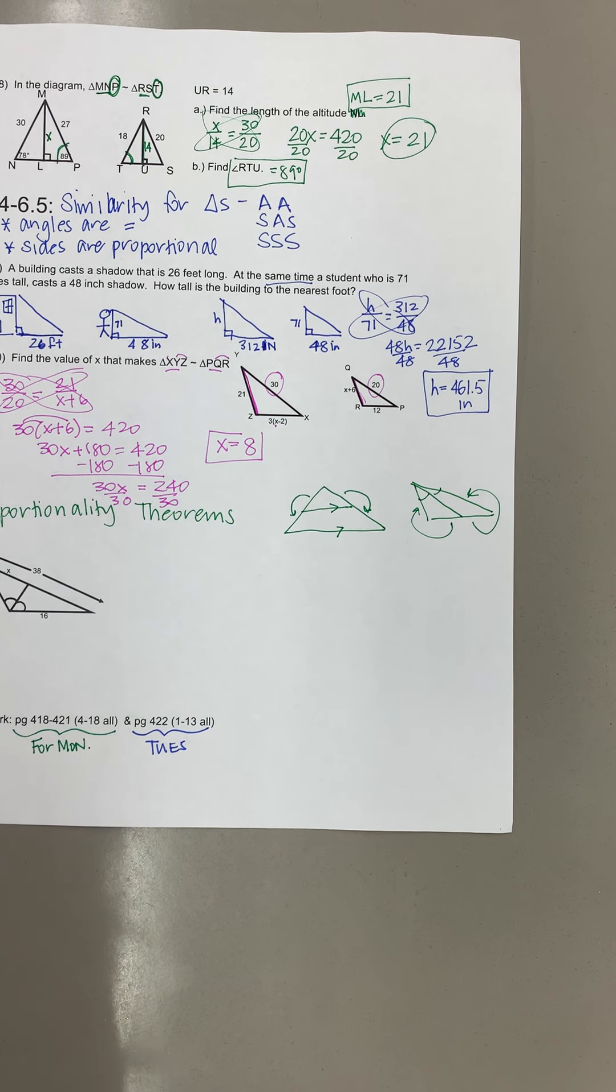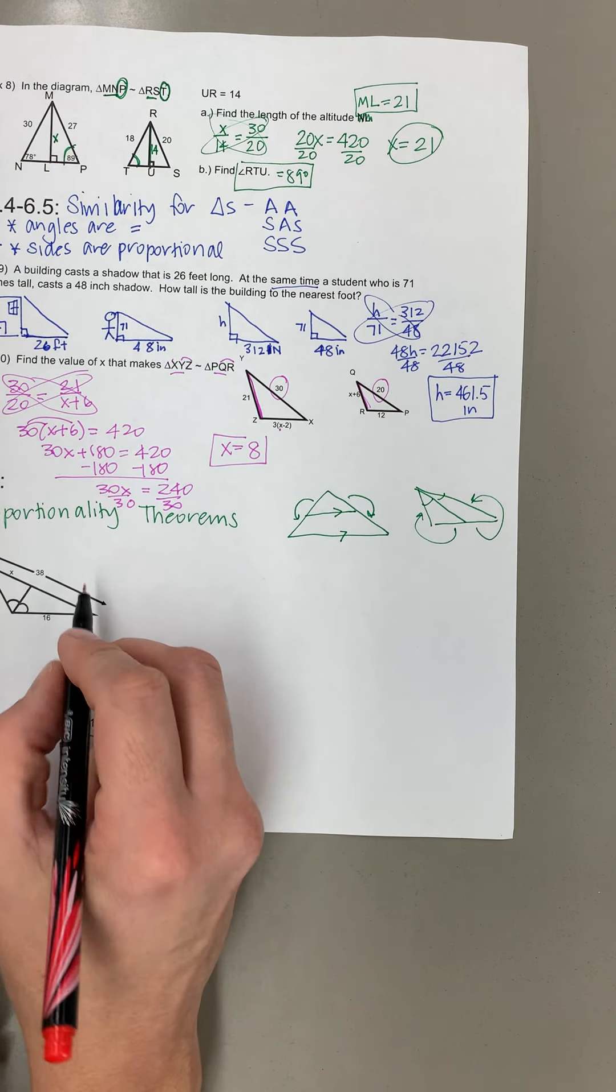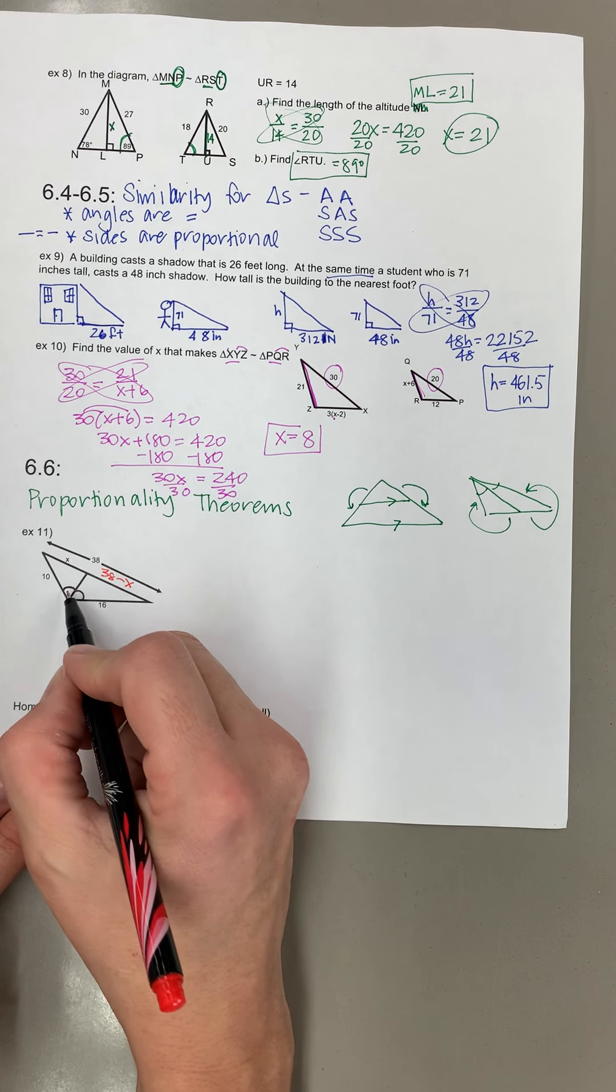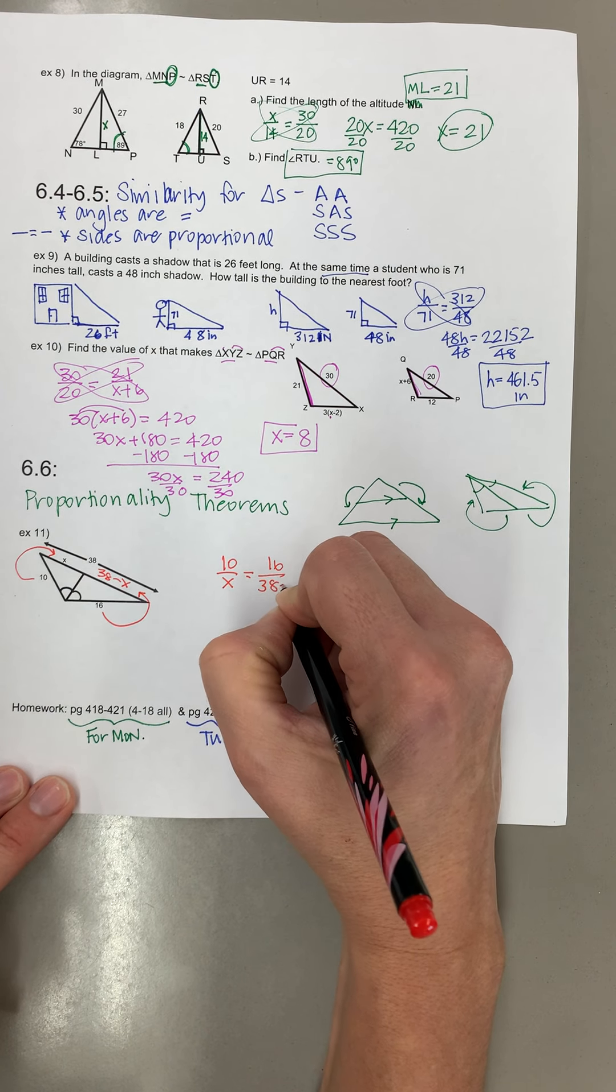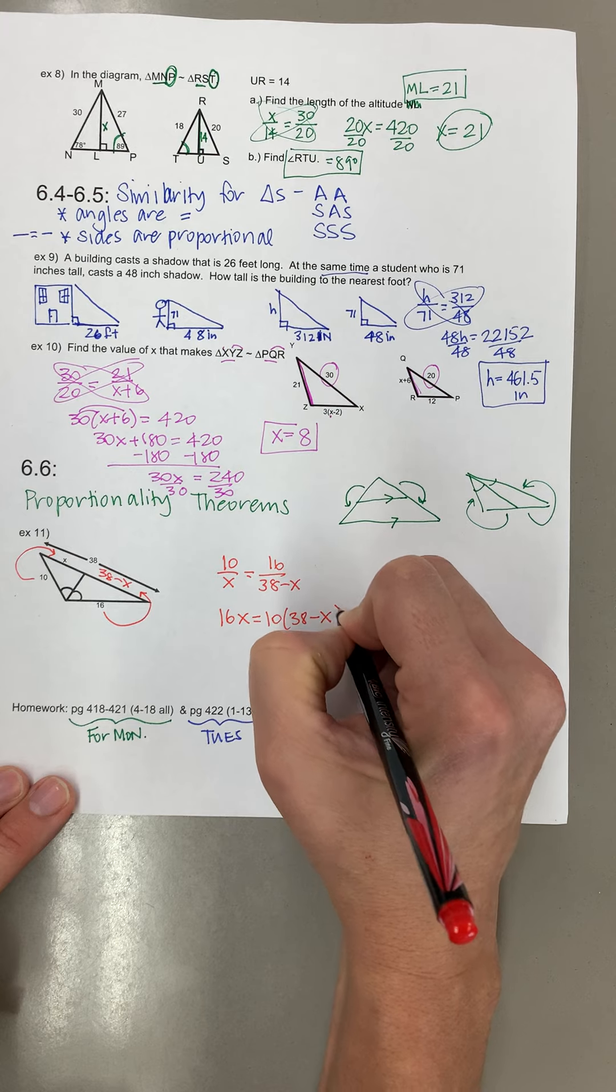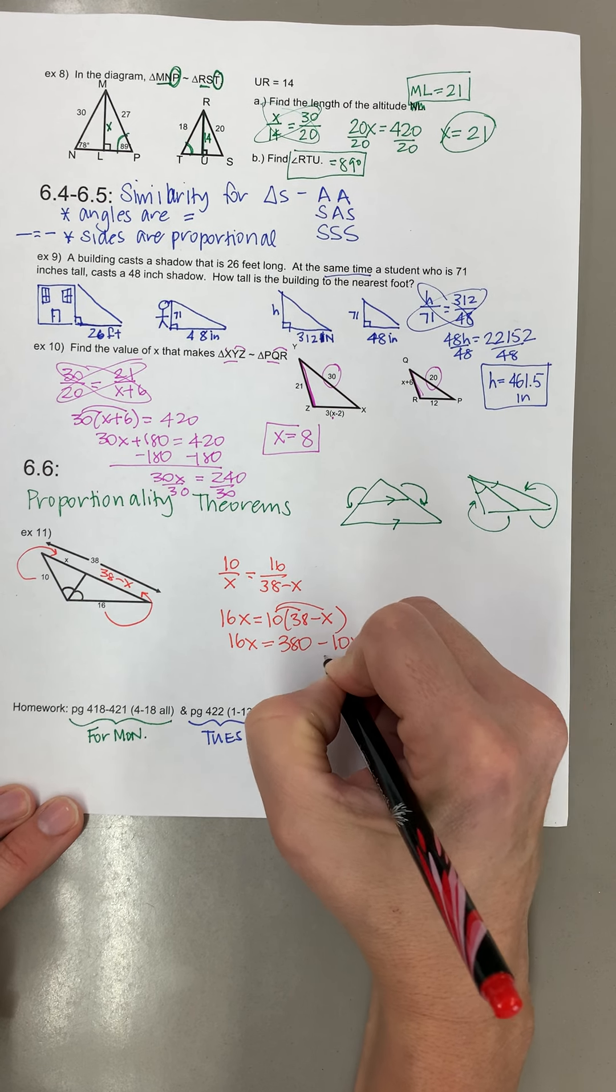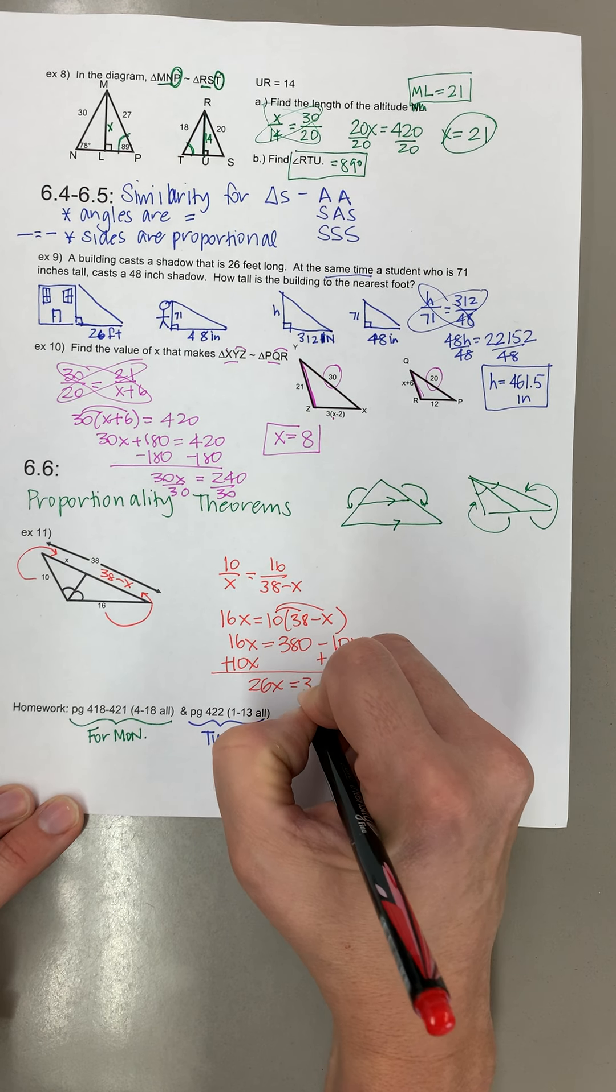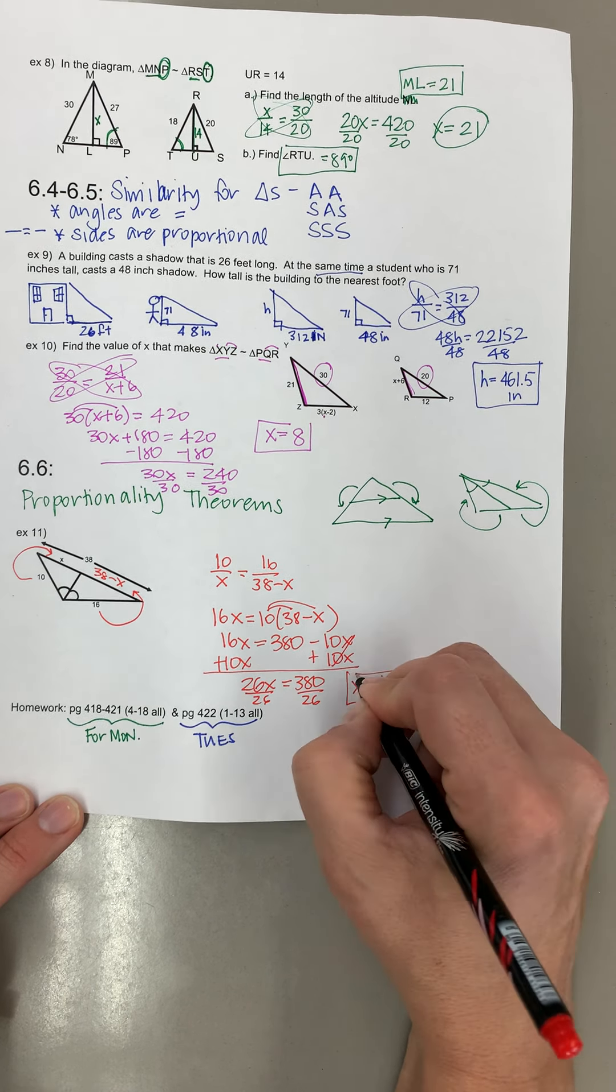So in this next problem here they tell us this is x, this whole thing is 38. So I want to know what this one is. And if this is 38 and this is x, this one has to be 38 minus x. And then since these are angle bisectors I know 10 goes with x. And then 16 goes with 38 minus x. So I can cross multiply. And so x ends up being 14.6.